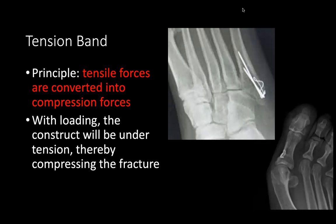Tension band wiring converts forces that distract into compression. It uses K-wires with a figure-eight band and is only used where a tendon is pulling — to reroute those forces into compression at the fracture site, such as at a fifth metatarsal fracture or deltoid. There must be a tendon pulling for tension band wiring to work. Circlage wire in a proximal phalanx of the hallux looks similar but is different — it's just used to fixate small osteotomies.